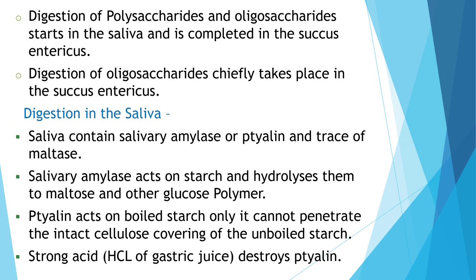Digestion of polysaccharides and oligosaccharides starts in the saliva and is completed in the succus entericus. Digestion of oligosaccharides typically takes place in the succus entericus. Saliva contains salivary amylase (ptyalin) and a trace of maltase. Salivary amylase acts on starch and hydrolyzes it to maltose and other glucose polymers. Ptyalin acts on starch only; it cannot penetrate the intact cellulose covering of unboiled starch.